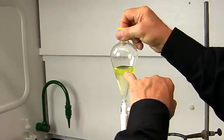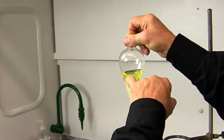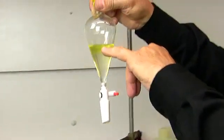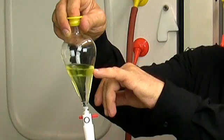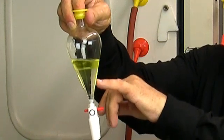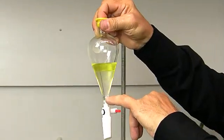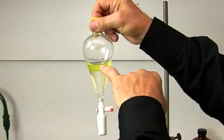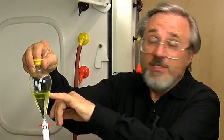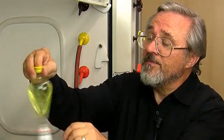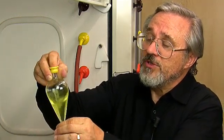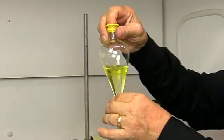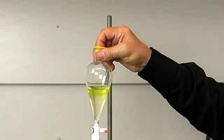You can see that the lighter layer, the diethyl ether layer is on top, and it still has the fluorenone in it, but the lower aqueous layer is colorless. So the fluorenone, at least in our observation, is still in the diethyl ether layer. I'm going to swirl that around a little bit more so that we get all that solid dissolved. And there it goes.